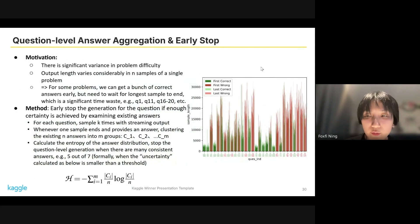Then I'll introduce our question-level early stop strategy. The difficulty varies across problems, so we aim to avoid spending too much time on easy problems. As shown in this right figure, the output length also varies considerably across samples for a single problem. This suggests that for some problems, we may obtain several correct answers very early but still need to wait for the longest samples to finish, and this will result in significant waste. So our method is to early stop the generation for the question if enough certainty is achieved by examining existing answers. Specifically, we terminate generation of the question when the majority of the outputs are consistent.